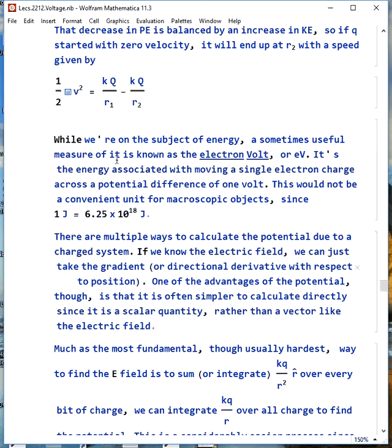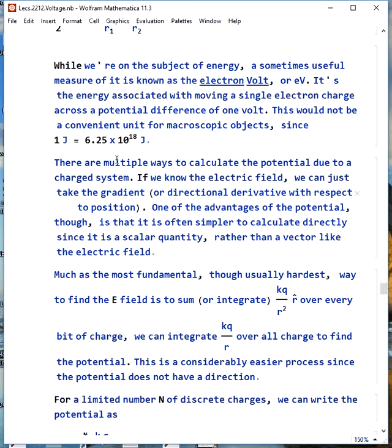Now, while we're talking about energy, a useful measure of it is the electron volt. We don't have to use the joule for everything. Sometimes there are more appropriate units. The electron volt would not be good for things like baseballs because it's too small. It's an atomic unit, essentially. One joule is 6.25 times 10 to the 18th electron volts. The electron volt is so small because it's the energy required to move one electron charge across a one volt potential difference. That's tiny.